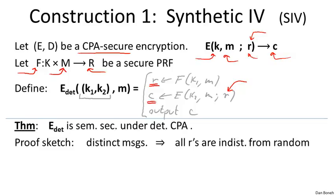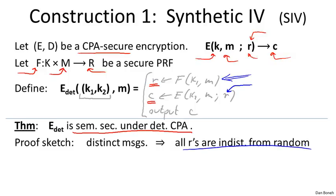It's fairly easy to show that this encryption scheme is semantically secure under a deterministic chosen plaintext attack. The reason is that we apply the pseudorandom function F to distinct messages, so the random strings F generates look like truly random strings — a different random string for each message. As a result, the CPA secure encryption scheme E is always applied using truly random strings, which is exactly when it is CPA secure. Since these R values are indistinguishable from random strings, the resulting system is CPA secure.